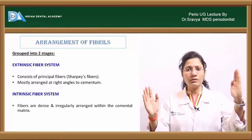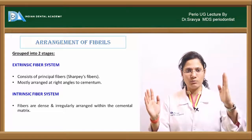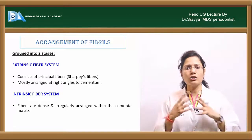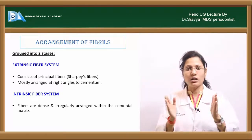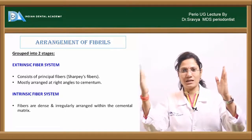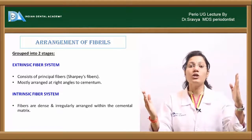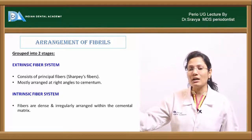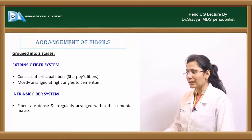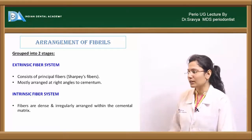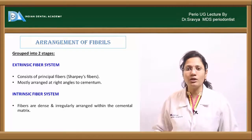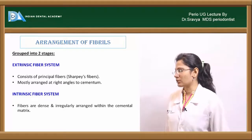The periodontal ligament lies between the tooth and the alveolar bone. Terminal portions of its collagen fibers attach on one side to the cementum and on the other to alveolar bone — constituting extrinsic fiber cementum, namely type 1 collagen. Intrinsic fibers are present within the cementum matrix itself.